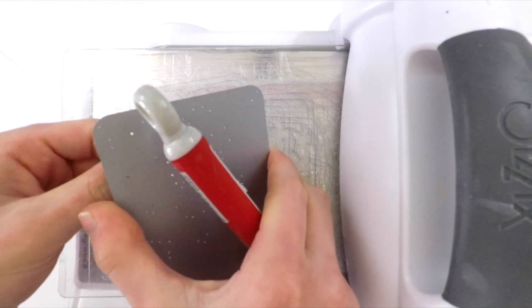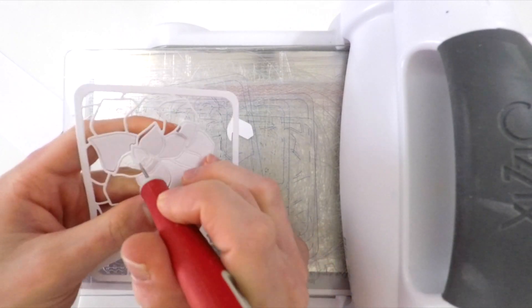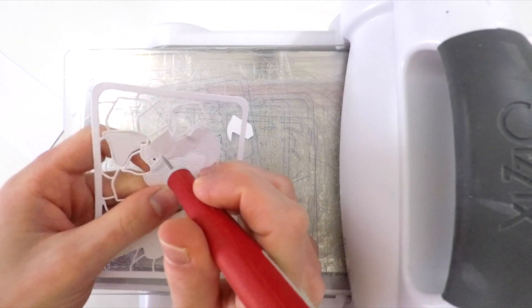I'm using my craft pick to help me pop this die out of the frame. This craft pick is really great for getting these tiny little areas to make sure I get all those little pieces out of the die.